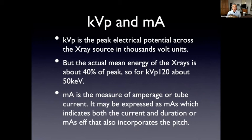KVP is a term that's used for the peak electrical potential across the x-ray source. And the P stands for peak KV. This is not the average value. The beam doesn't have a single energy. The x-ray beam actually is composed of a number of different energies. They call it a polychromatic beam. And the actual mean energy of the beam is about 40% of the peak. The MA is the measure of the amperage or tube current. This can be expressed as mAs, which indicates both the current and duration or mAs effective. That also incorporates the pitch.